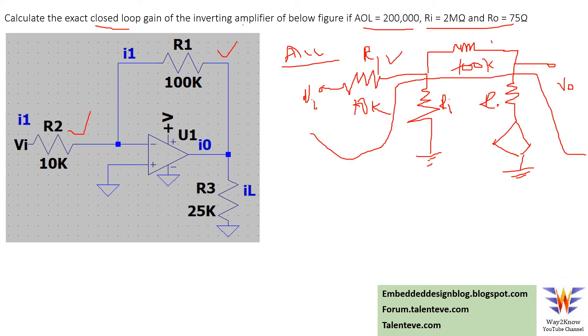Simply, the closed loop gain of an inverting amplifier is minus RF by R1, which is minus 100k (the feedback resistor) divided by 10k, which gives minus 10. So the closed loop gain of this op-amp is minus 10.